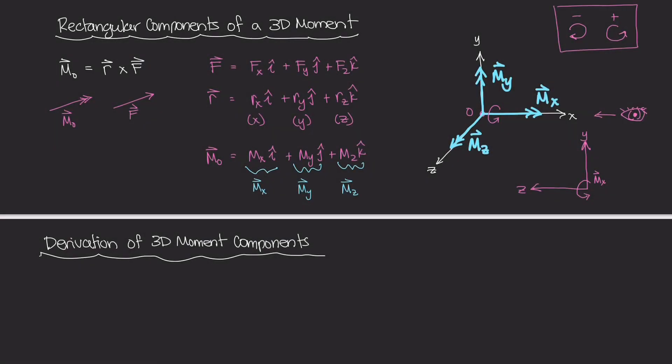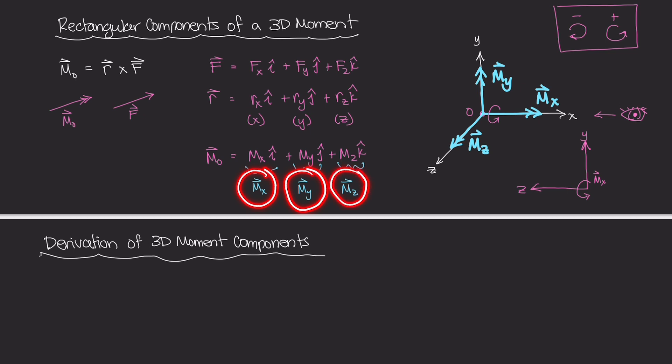Welcome back. In the last video, we had an introduction to the three different components of a moment about some point O in three-dimensional space. In this video, I want to derive what these values are: mx, my, and mz.